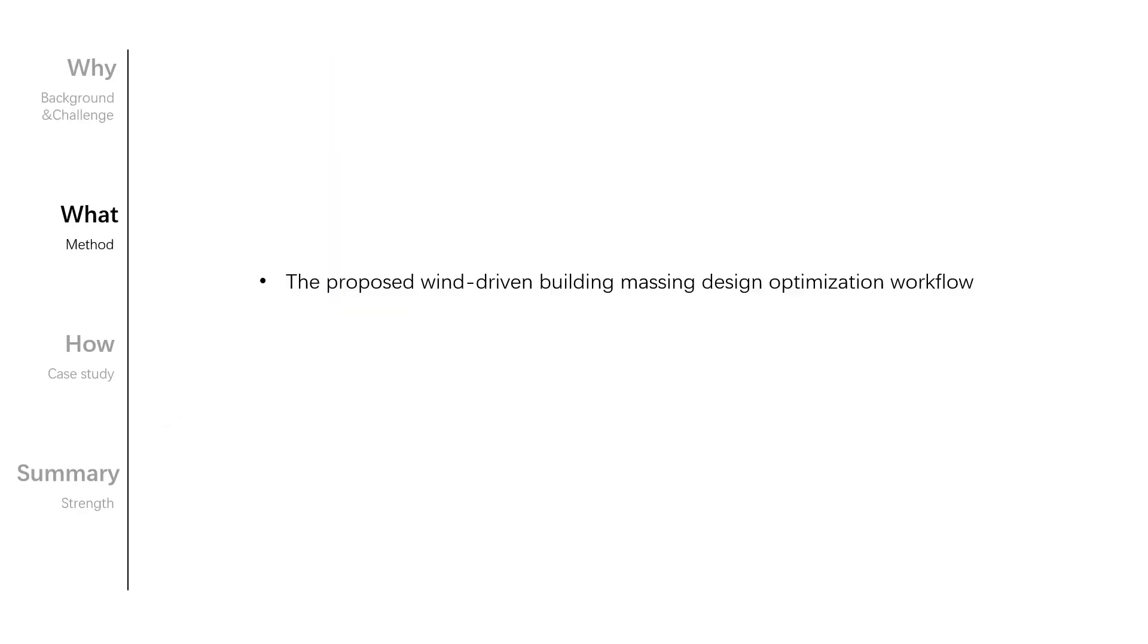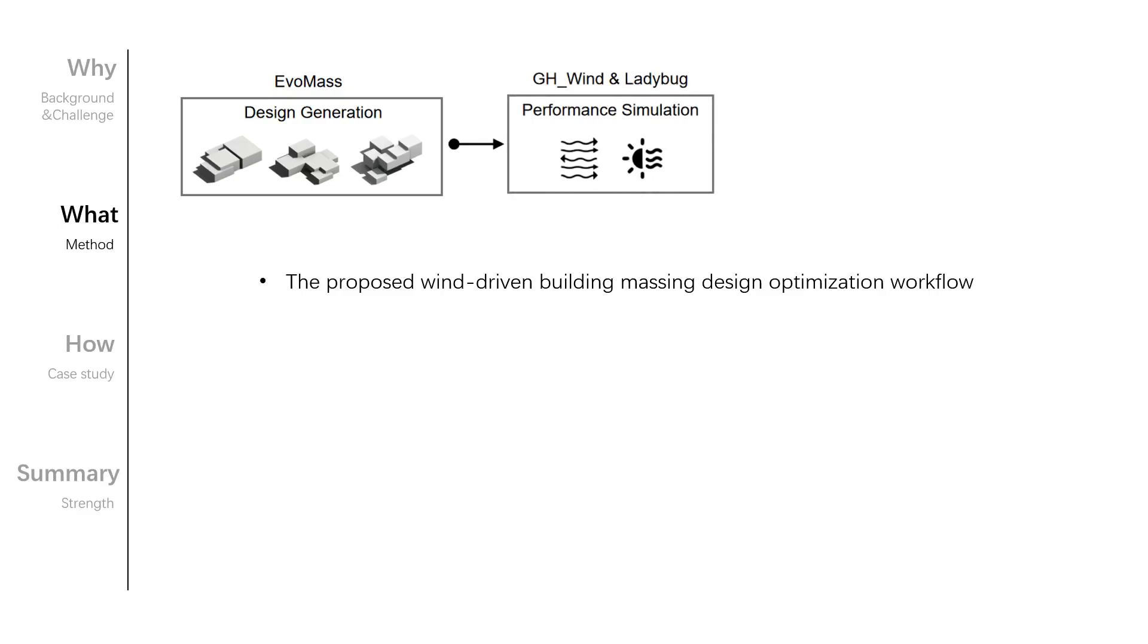In response to the challenges mentioned above, this paper presented a workflow using EvoMass and GH_Wind in the Rhino-Grasshopper environment. This workflow consists of three steps. First, its generative algorithm keeps creating mass with high geometrical variability. Second, a simulation is conducted to calculate the performance of the generated building massing. And finally, an optimization process is carried out and produces high-performance design variants as a result.